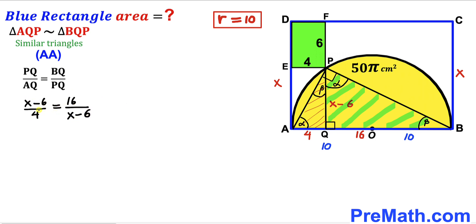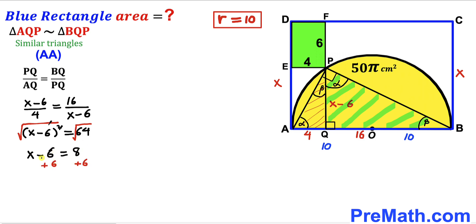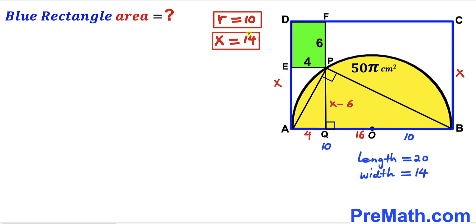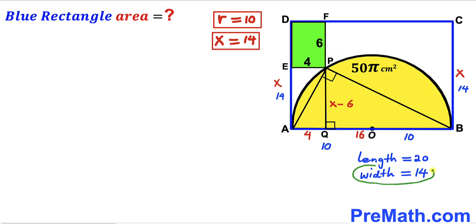Cross-multiplying gives (x − 6)² = 16 × 4 = 64. Taking the square root of both sides, x − 6 = 8. Adding 6 to both sides, x = 14 cm. So the width of the blue rectangle is 14 cm, and the length is 20 cm.